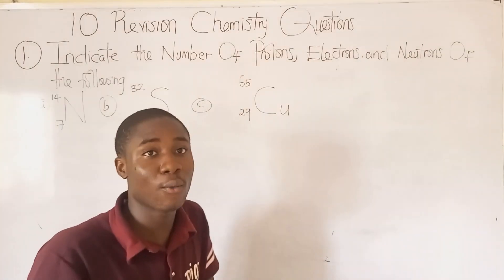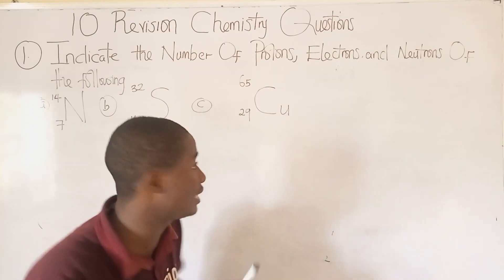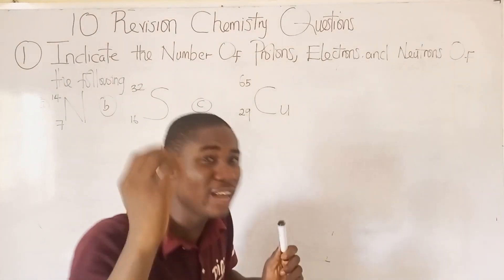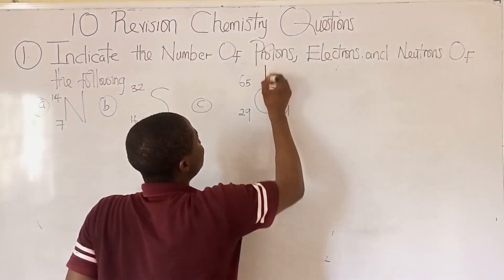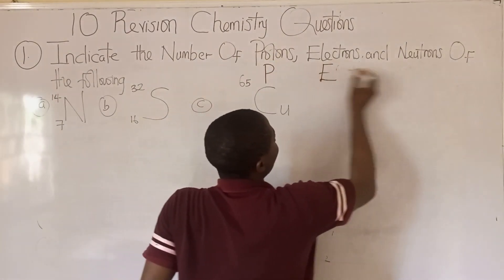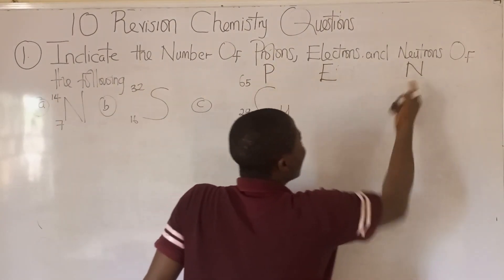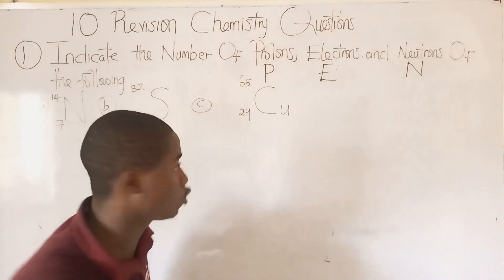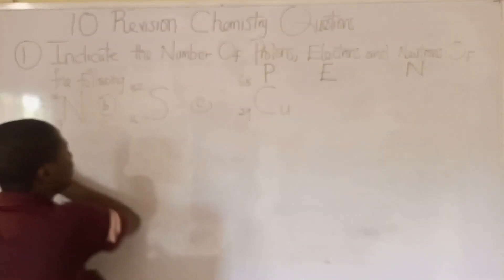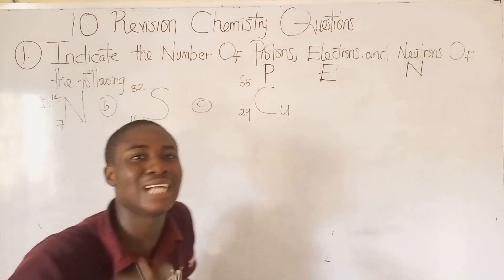We have to basically know how to solve questions pertaining to how to determine the protons, electrons, and neutrons of an atom — this can be regarded as the 'PEN' of an atom: proton, electron, and neutron. Now, in the look of things, all these atoms here are neutral.